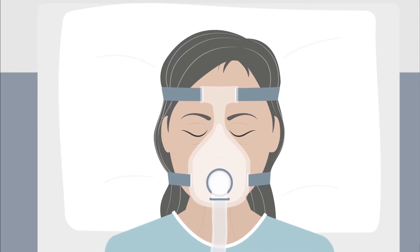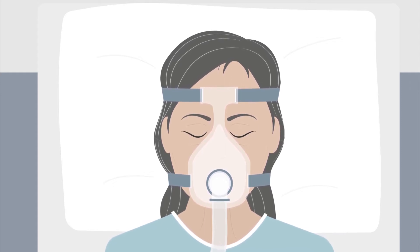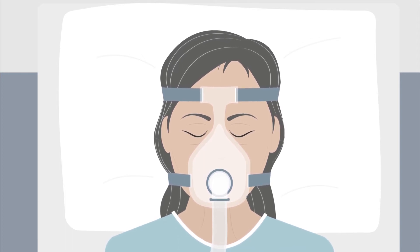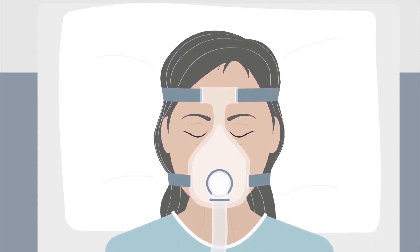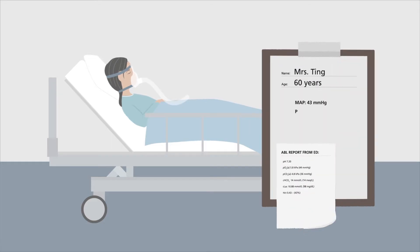The patient, Mrs. Ting, has now arrived at the ICU. From relatives, you learn that Mrs. Ting has suffered from high temperature and productive coughing for three days. She has no prior medical history, and she's a non-smoker. The ABL patient report also gives you the lactate level, which in this case is increased.